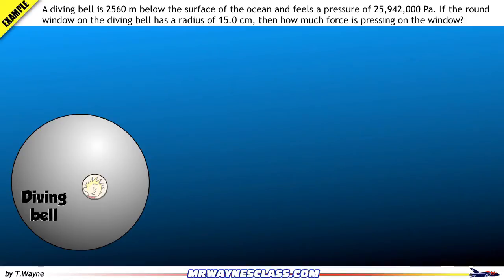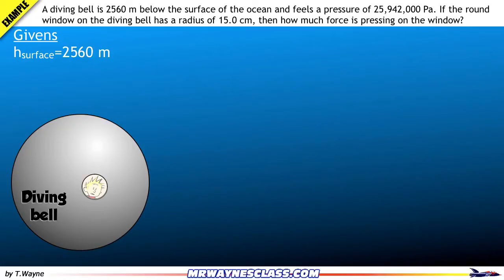So let's start by listing our givens, and when listing the givens, we'll look for some unit clues. The diving bell is 2,560 meters below the surface of the ocean. But I'm not going to call it the depth when listing my givens. Instead, I'm going to call it the height that the ocean surface is above the bell — so the diving bell is the lowest point, I'll call that 0 — meaning the height is 2,560 meters.